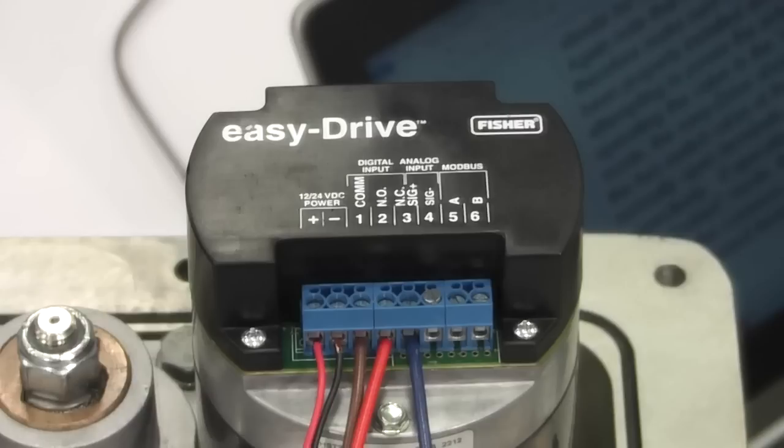If operating the valve in the L2E dual contact mode, the EZ-Drive should be wired at the common with the brown wire, normally open with the red wire, and normally closed with the blue wire. Terminals 1, 2, and 3 respectively.